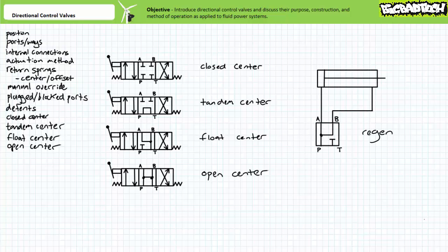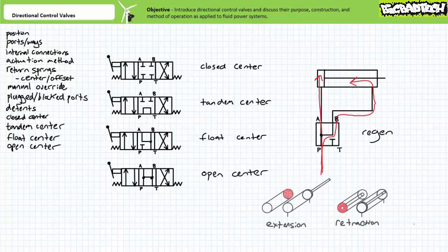Finally, consider a bonus position known as regen — not necessarily a center position, but a position of interest to be examined in later lectures. The regen position routes pressurized flow to both actuator ports A and B simultaneously. Pause to consider the ramifications: would a double-acting cylinder with both cap and rod end at the same pressure extend, retract, float freely, or hold position? If you know how a double-acting cylinder works and have a passing familiarity with Pascal's law, think: equal pressure, different area. We will return to this extremely cool application in later lectures.